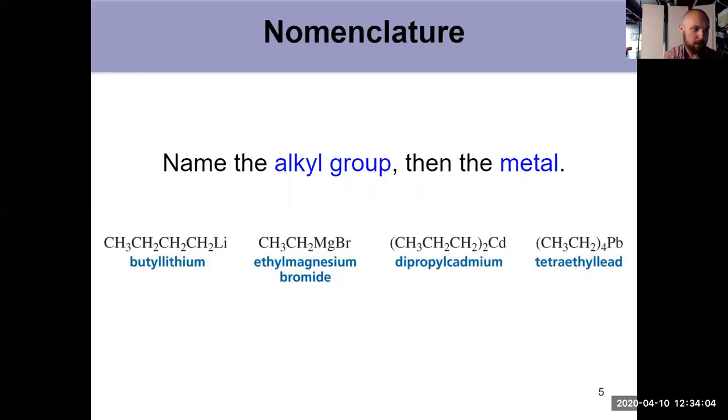In number two, ethyl group with magnesium, so it's ethyl magnesium and then the counter ion is bromide. That's called a Grignard reagent. Number three: dipropyl cadmium, and then last, tetraethyllead.